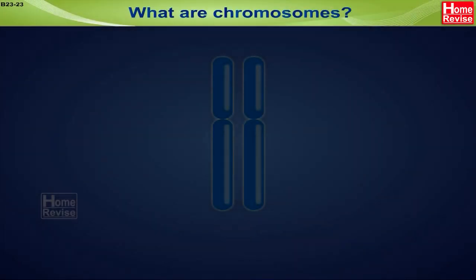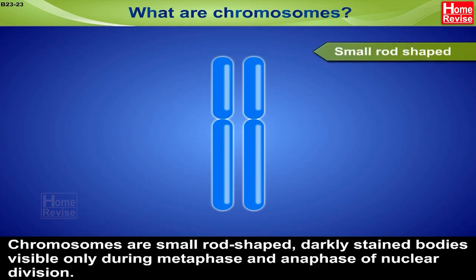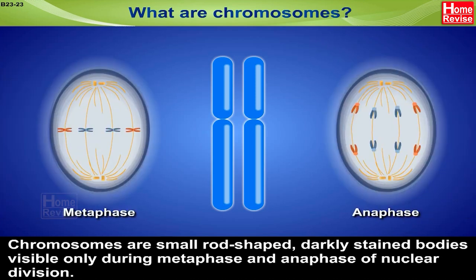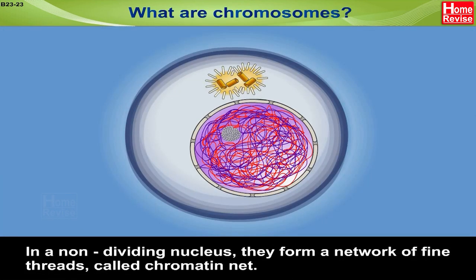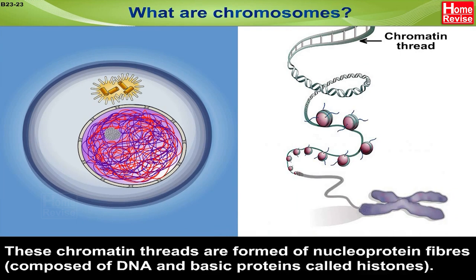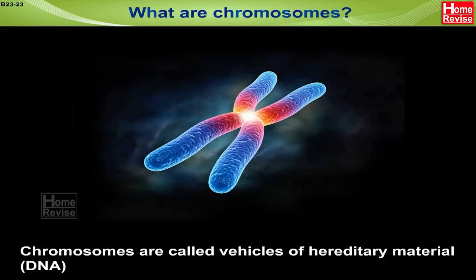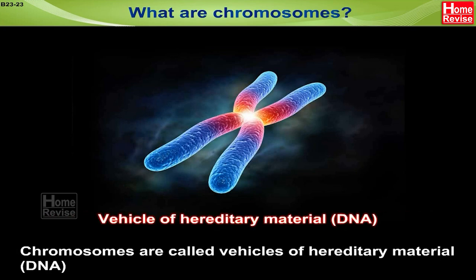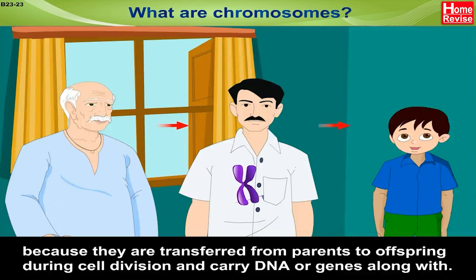What are chromosomes? Chromosomes are small, rod-shaped, darkly stained bodies visible only during metaphase and anaphase of nuclear division. In a non-dividing nucleus, they form a network of fine threads called chromatin net. These chromatin threads are formed of nuclear protein fibers composed of DNA and basic proteins called histones. Chromosomes are called vehicles of hereditary material — that is, DNA — because they are transferred from parents to offspring during cell division and carry DNA or genes along with them.